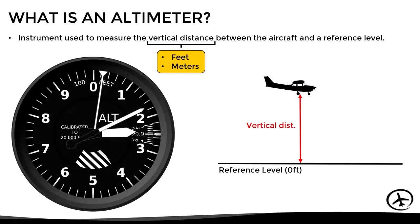The altimeter measures how high the aircraft is with respect to that reference level. This vertical distance can be expressed in terms of feet or meters, even though most altimeters are calibrated in feet. We say vertical distance instead of altitude or height because that vertical distance may have different names depending on the reference level being used.